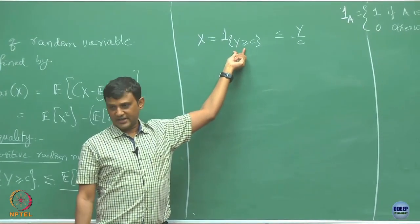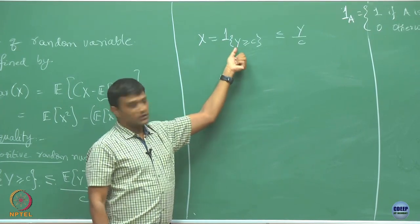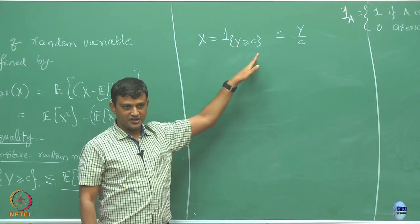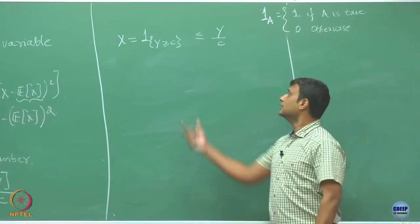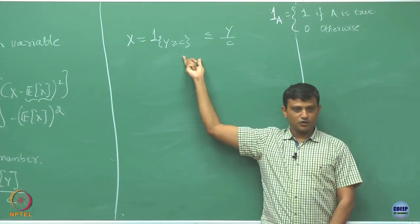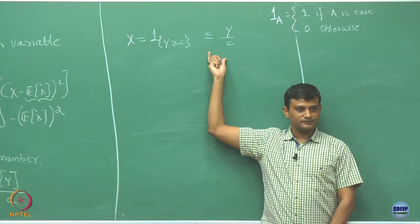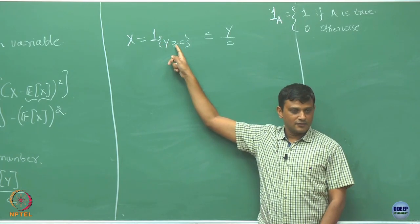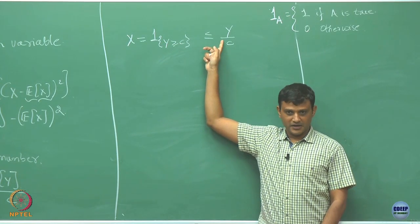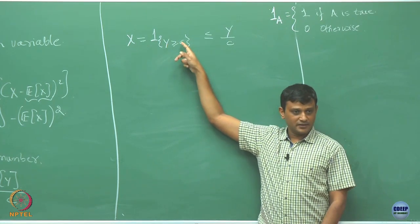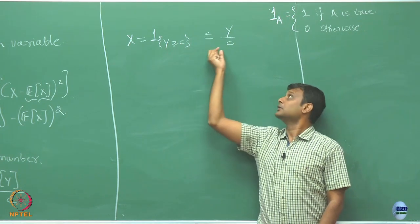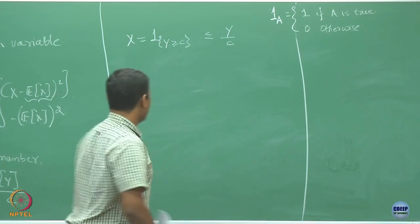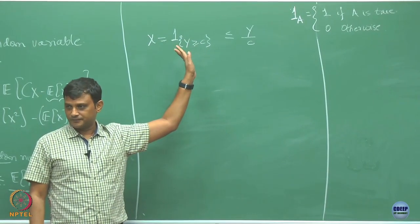Now, is the relation — that the indicator function is less than or equal to Y divided by c — true for a positive random variable? Suppose Y is greater than or equal to c: the left quantity is 1 and the right quantity is greater than or equal to 1, so it holds. Suppose Y is less than c: the left quantity is 0 and the right quantity is some positive non-zero number, so this relation again holds. Whatever your choice of c, this relation holds.